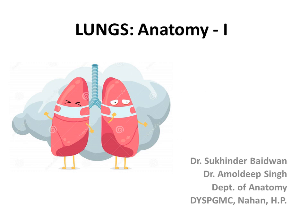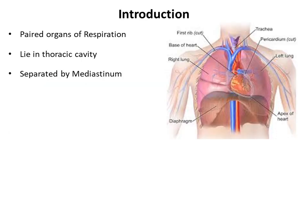The topic is anatomy of the lungs. The lungs are paired organs which are essential for respiration. They lie in the thoracic cavity. The right and left lungs are separated by a median septum called the mediastinum.